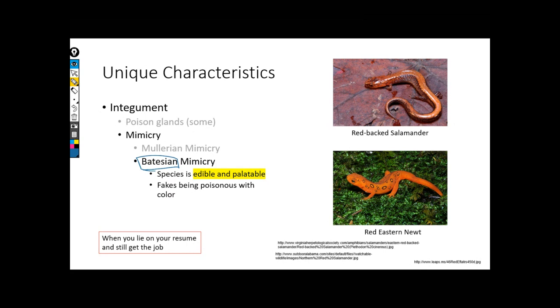But Batesian mimickers are liars, and they're depending on that mode of learning that we established in Mullerian mimicry. So here in the previous version, we sat and taught all of the birds, 'Hey, red salamanders are poisonous. You're going to die.'